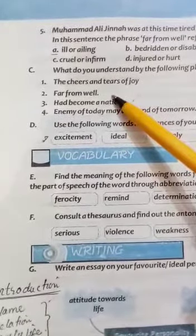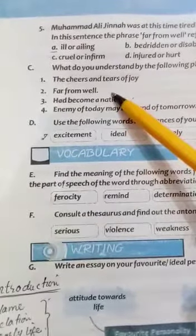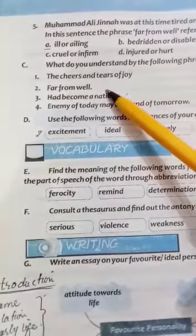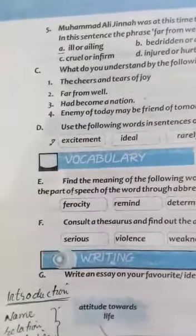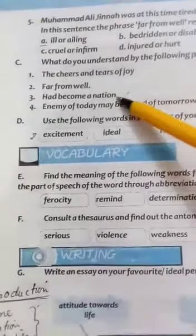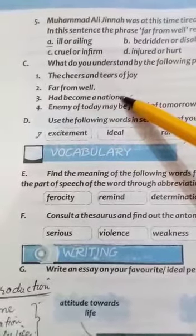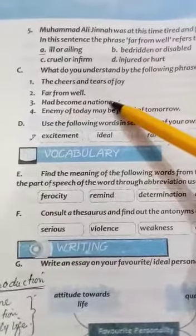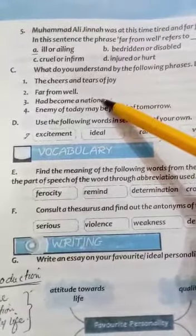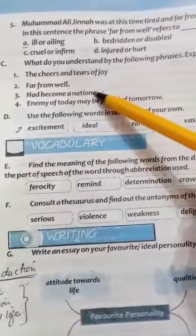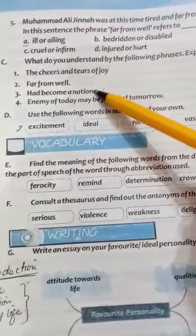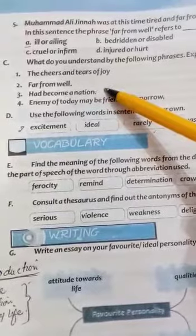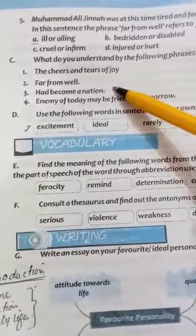Phrase 2 is 'far from well'. 'Far' means at a distance and 'well' means good, but in this phrase it means away from goodness — away from good health — meaning sick or ill. That phrase was used for Quaid-e-Azam. Phrase 3 is 'had become a nation'. A nation is a group of people living together or sharing one objective. Muslims living in India were a nation with one objective — Islam — but were not officially recognized. After the announcement of independence, Muslims of India officially became a recognized nation.